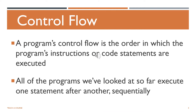Let's break this down. What is a control flow? A program's control flow is the order in which the program's instructions are executed. All the programs we've looked at so far execute one statement after the other. We created a variable then printed it, or created multiple variables and printed them. Each line of code was executed sequentially — line 1 before line 2, line 2 before line 3, and so on.